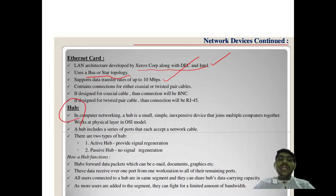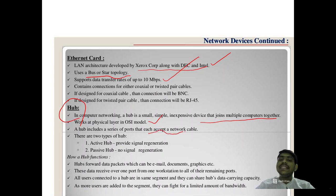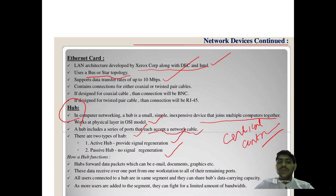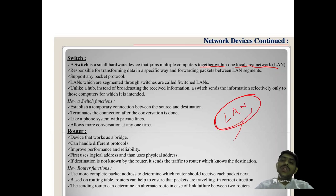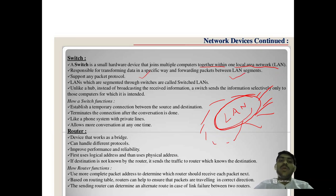Hub: in computer networking, a hub is a small, simple, inexpensive device that joins multiple computers together. It works at the physical layer in the OSI model. A hub includes a series of ports, each accepting a network cable. Two types: active hub provides signal regeneration; passive hub has no signal generation. Switch: a small hardware device that joins multiple computers within one LAN. It is responsible for transmitting data and forwarding packets between LAN segments. The LANs segmented through switches are called switched LANs.